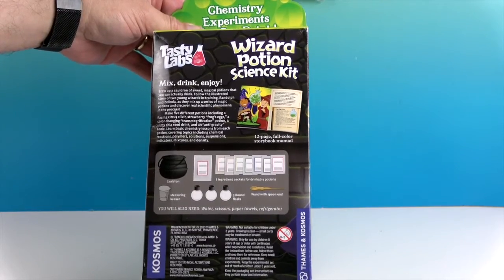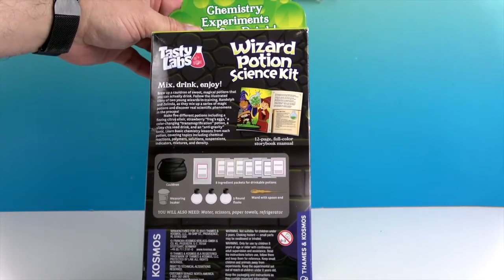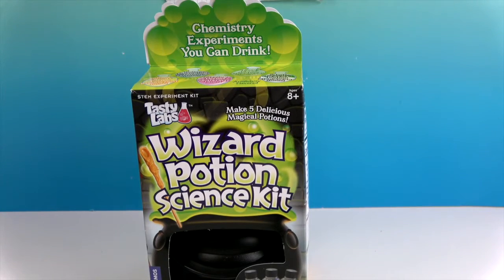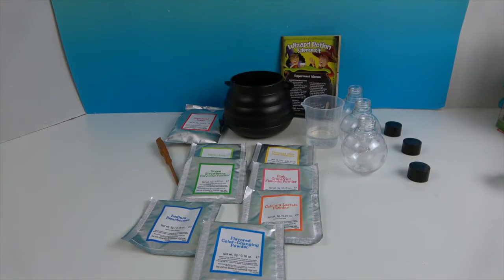There are three round flasks, a cauldron, a wand and spoon end, and a measuring beaker. Mix, drink and enjoy. All right, we're going to go ahead and open up this box, take out all the things and get to making our potions. There was a lot in that box.